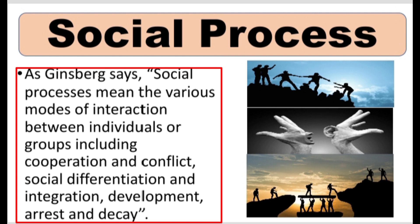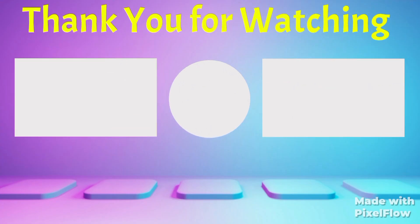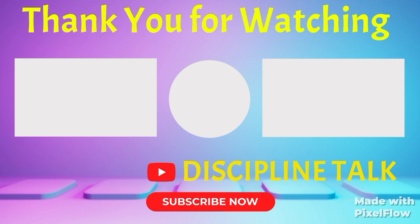These include cooperation, conflict, and also social differentiation, integration, and development. We can say it is both a static and dynamic process. According to Horton and Hunt, the term social process refers to repetitive forms of behavior which are commonly seen within social life. That concludes our topic — I hope you liked it. Don't forget to like, share, and subscribe to the Discipline Talk channel. Thank you for watching.